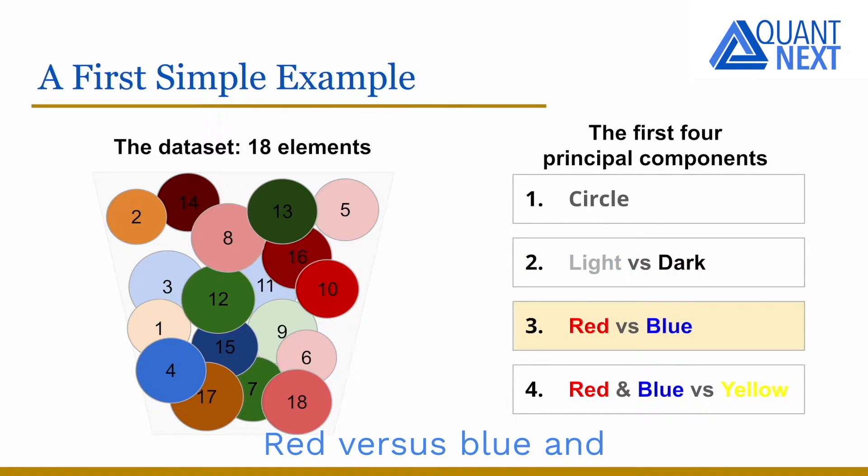Red versus blue and red and blue versus yellow. With a dimension of 4 instead of 18, we were able to explain most of the variants in our universe.